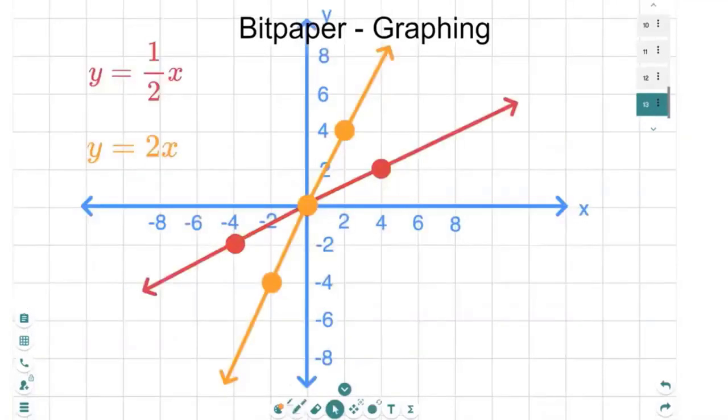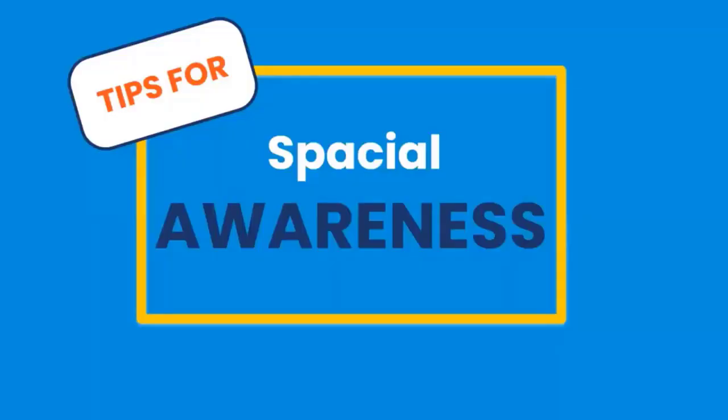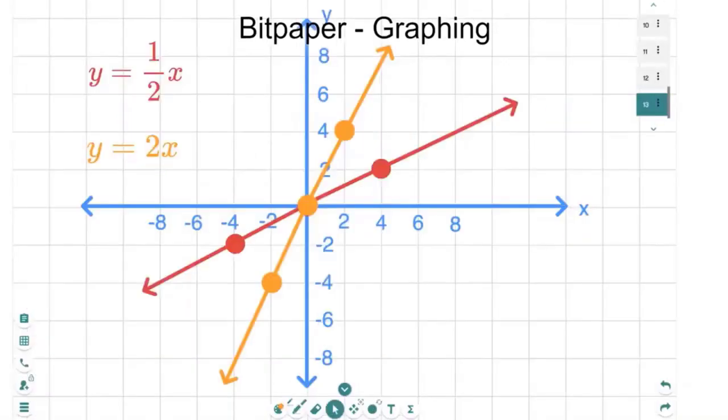And then with the graphing part, again, we love Bitpaper because I can make this graph so much bigger. If we go back to this example, this graph is borderline too little for a student with dyslexia. They need bigger graphs. And so we like using Bitpaper for this reason. We can make these boxes as big as we want. I think this particular size is a 60 by 60, which is really helpful.